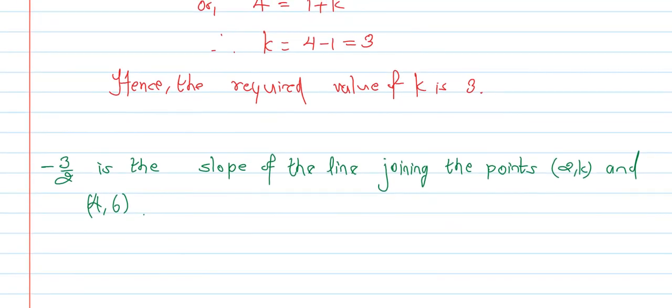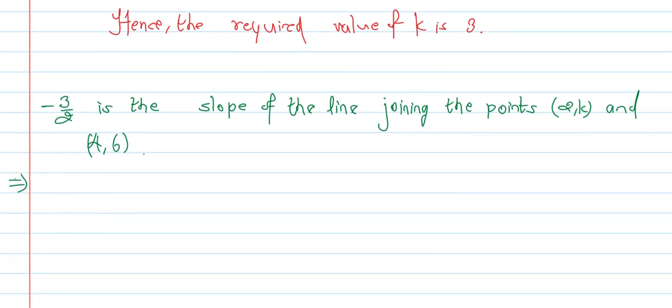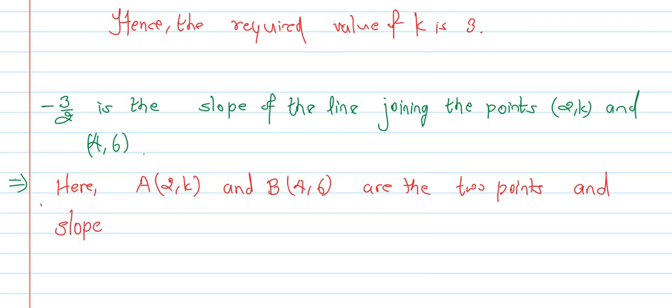First of all, given: Here A(2, k) and B(4, 6) are the two points, and slope of the line AB is minus 3 by 2.